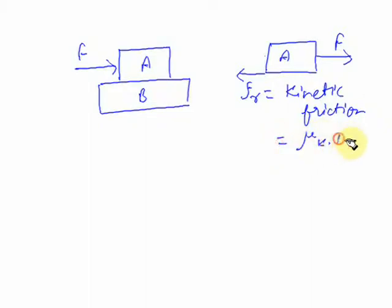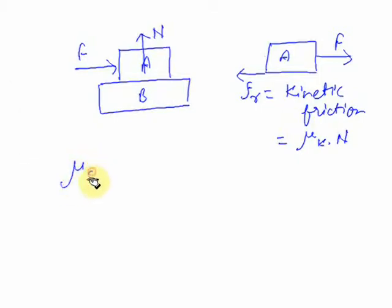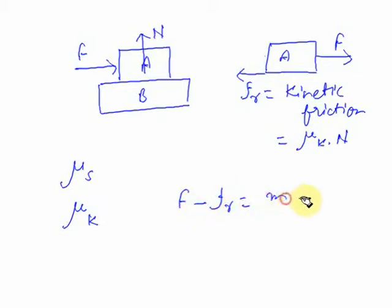The friction force is given by FR = μK × N, where N is the normal force acting on block A and μK is the coefficient of kinetic friction. The value of μK depends on the nature of the surfaces in contact. For a given pair of surfaces, there are two values of coefficient of friction: μS, which is the coefficient of static friction, and μK, the coefficient of kinetic friction. Writing the equation of motion for block A: F minus FR equals MA, where M is the mass of block A and A is the acceleration.